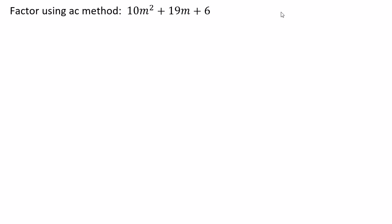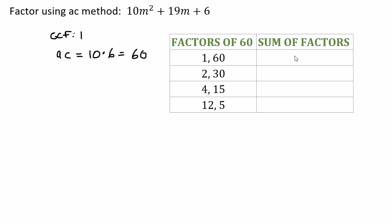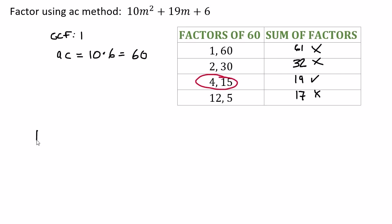Let's repeat the example 10m² + 19m + 6 using the AC method. The greatest common factor is 1. A times c is 10 × 6 = 60. Checking factors of 60: 1 and 60 sum to 61 — not 19. 2 and 30 sum to 32 — not 19. 4 and 15 sum to 19 — that's it! So the two integers we need are 4 and 15.